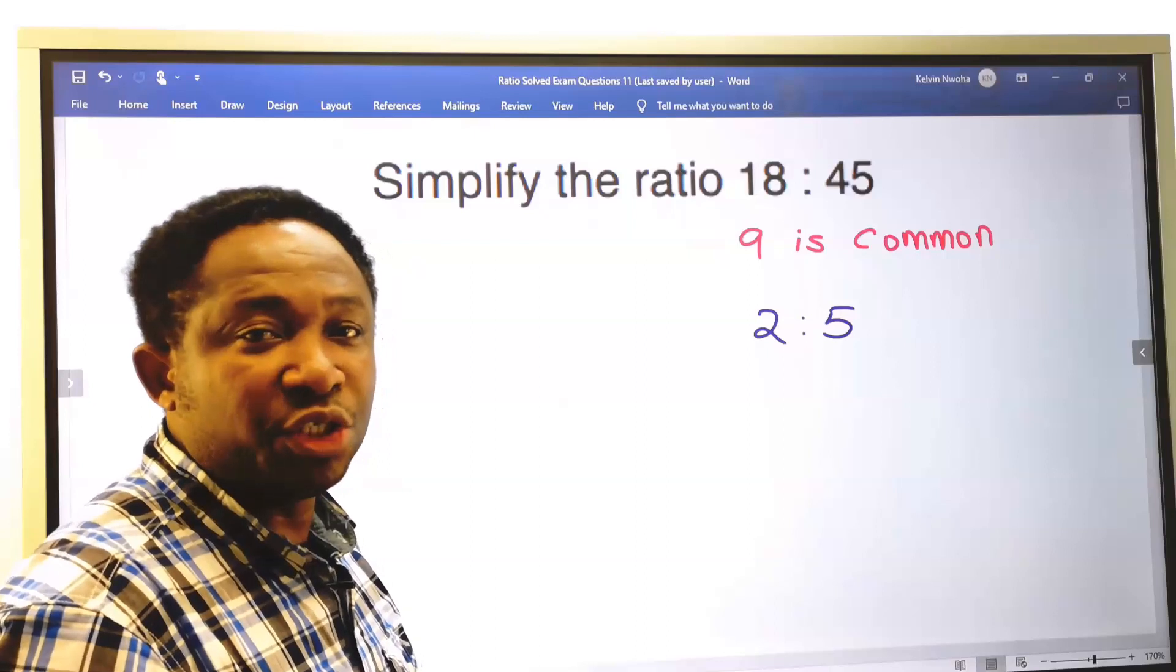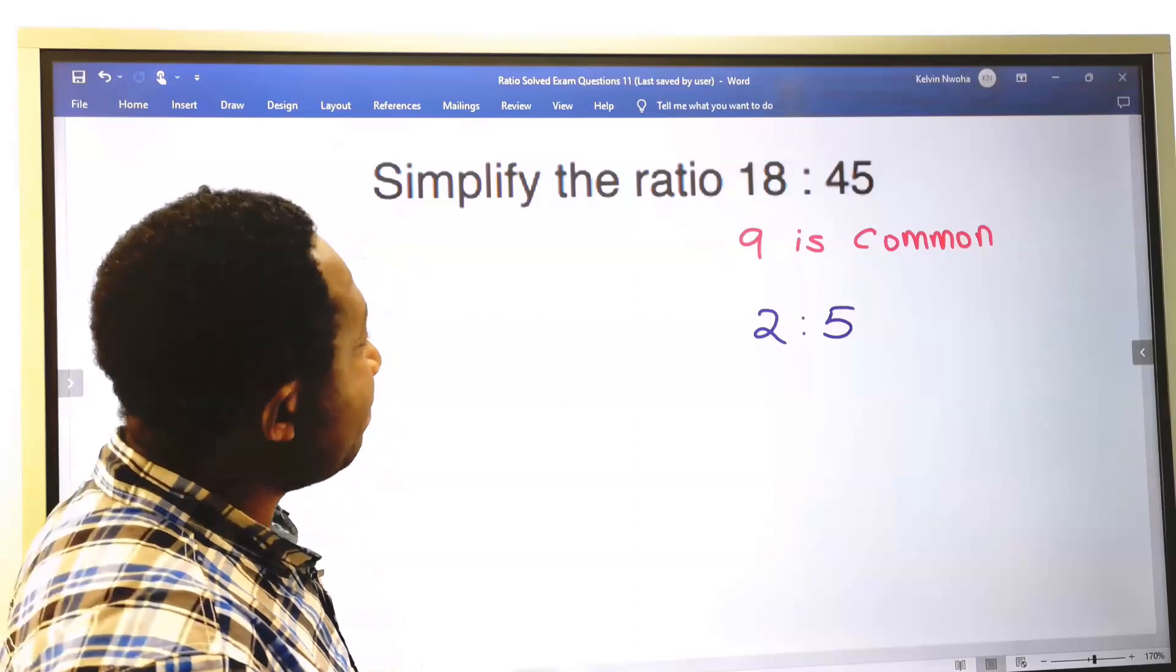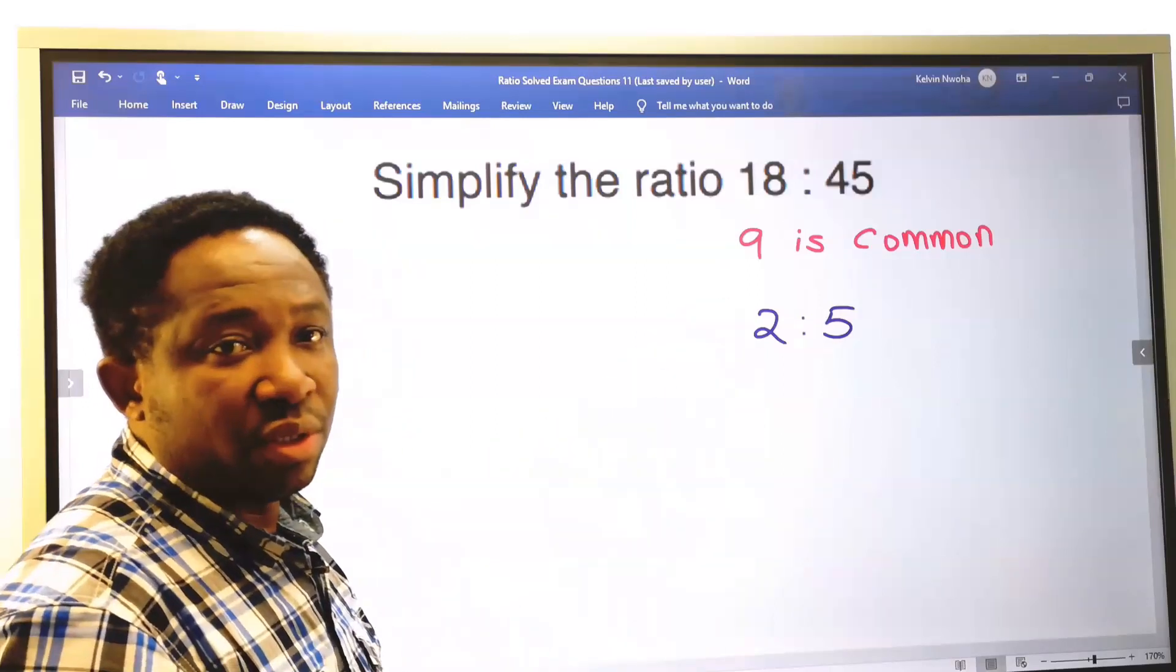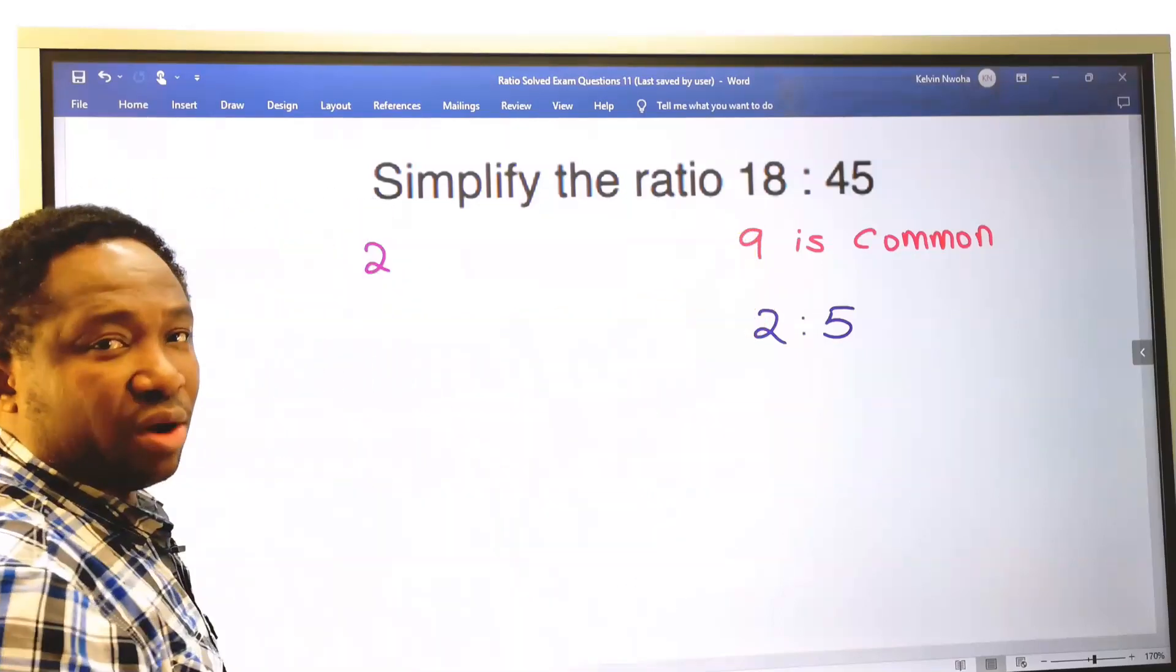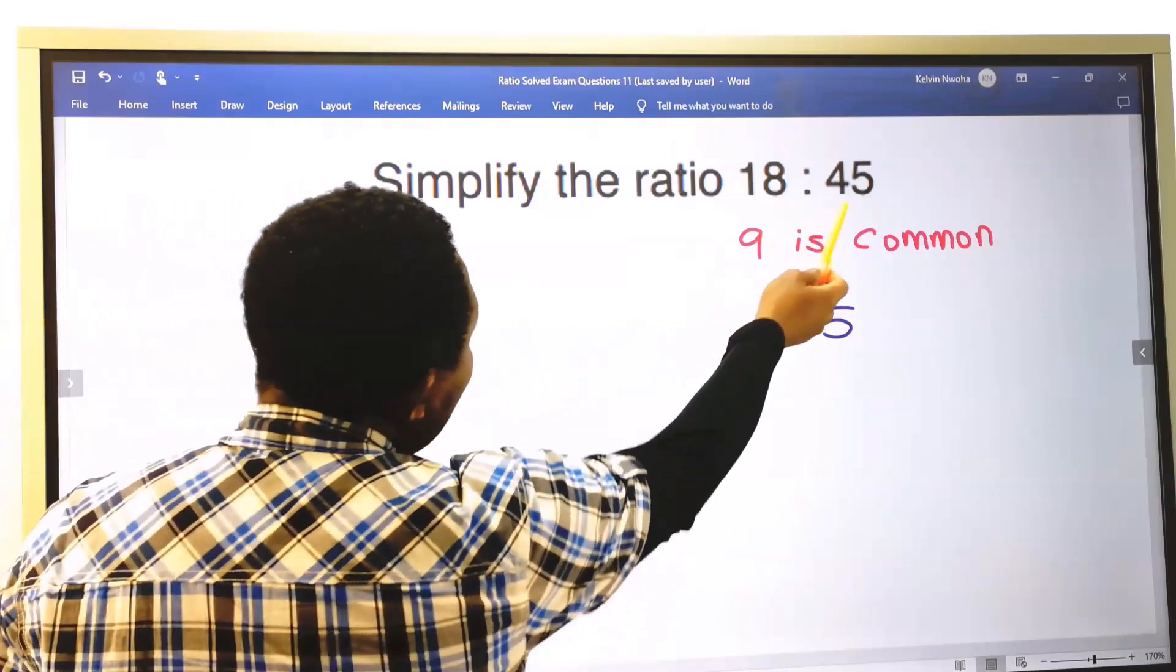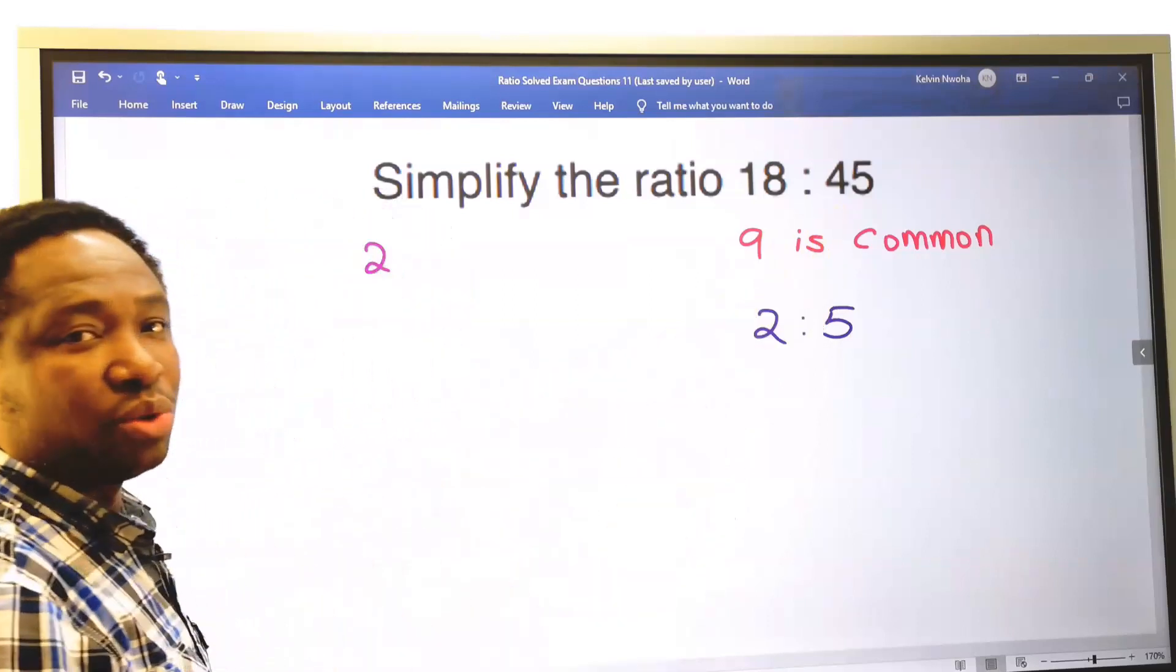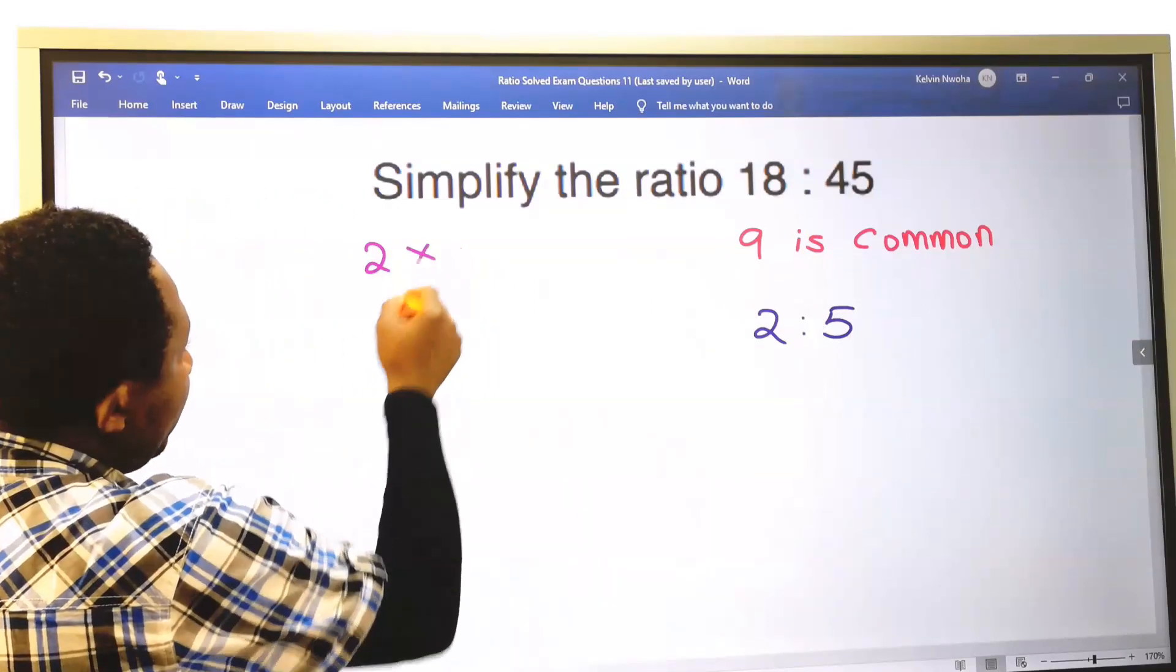In an exam condition where you can't quickly remember the common factor, you can start with 2. 2 can go into 18 without remainder, but 2 cannot go into 45. We're going to have a remainder. Ignore 2.